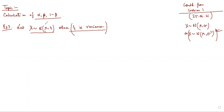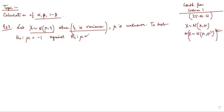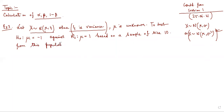X follows a normal distribution but the population mean mu is unknown. We want to test the null hypothesis H₀: mu = -1 against the alternative hypothesis H₁: mu = +1, based on a sample of size 10 from this population.